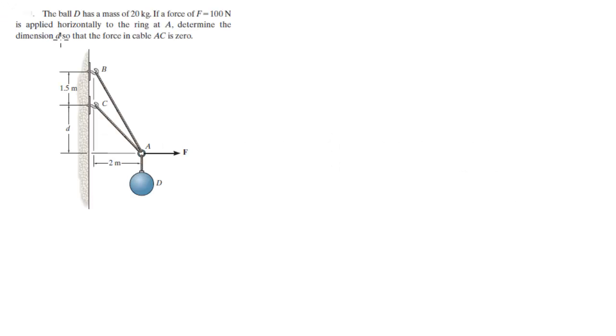Alright guys, now we're going to do this problem that says the ball D has a mass of 20 kg. If a force F of 100 N is applied horizontally to pull this ring at A to the right, then determine the dimension D right here so that the force in AC is zero, so this doesn't exist.